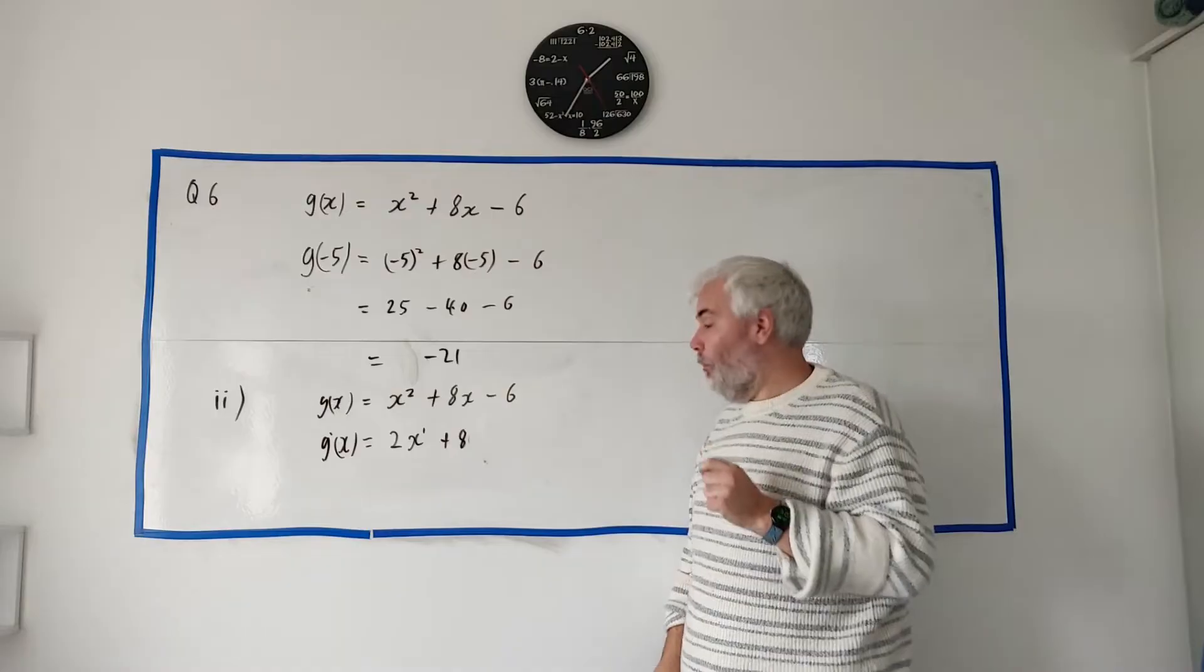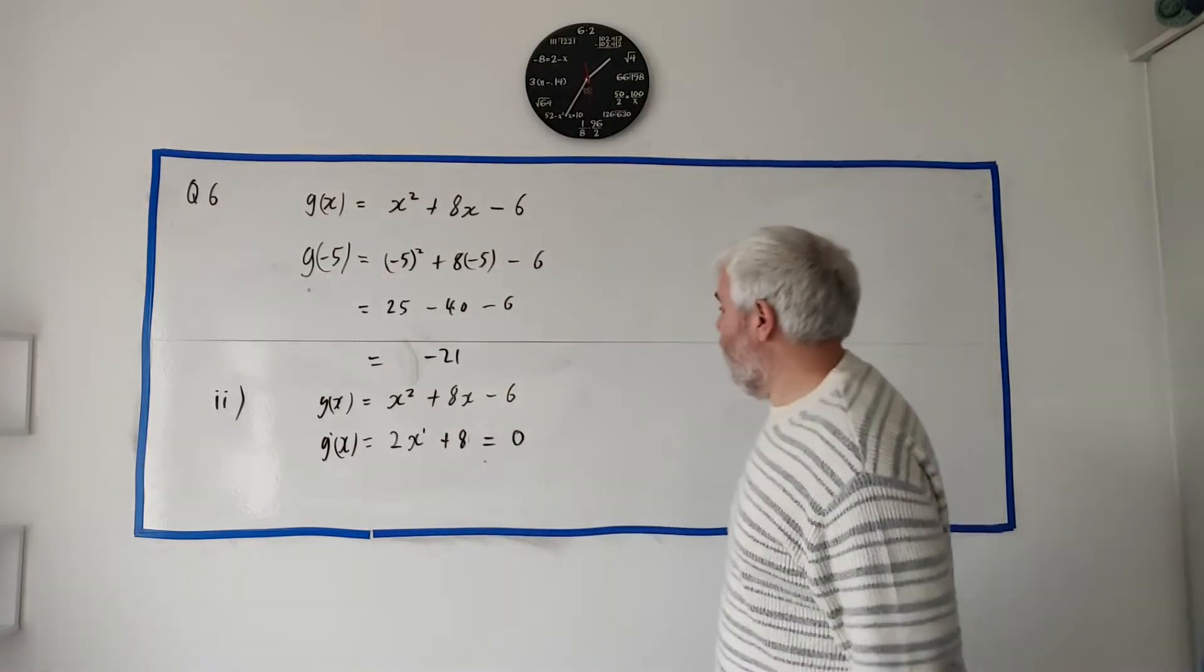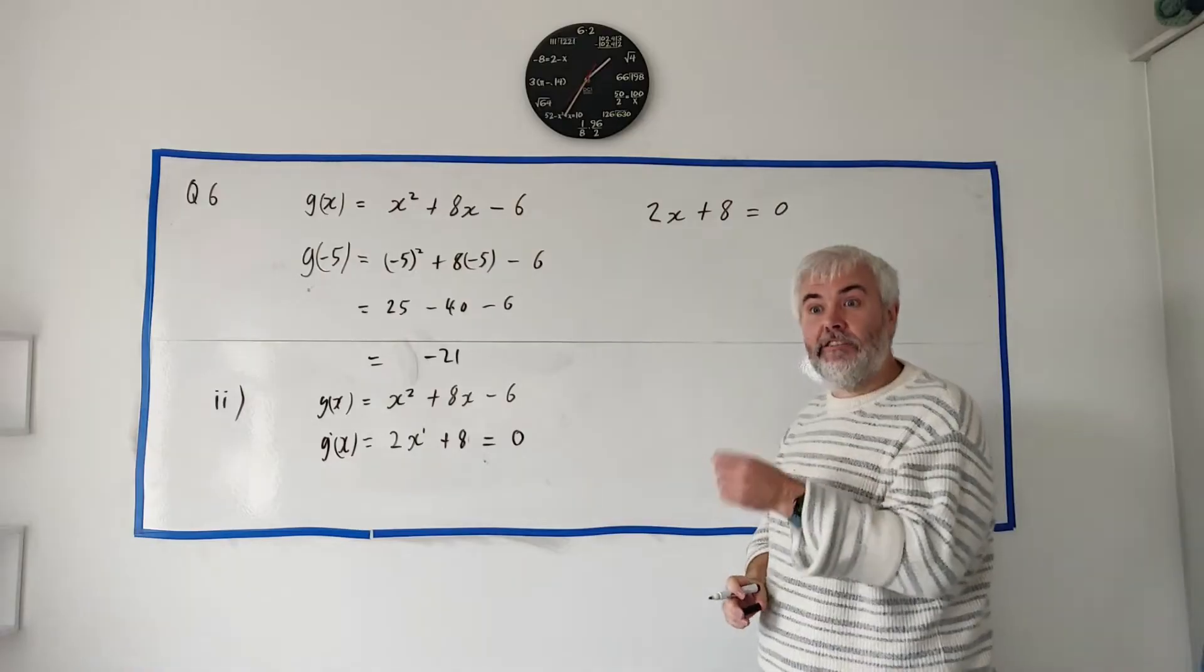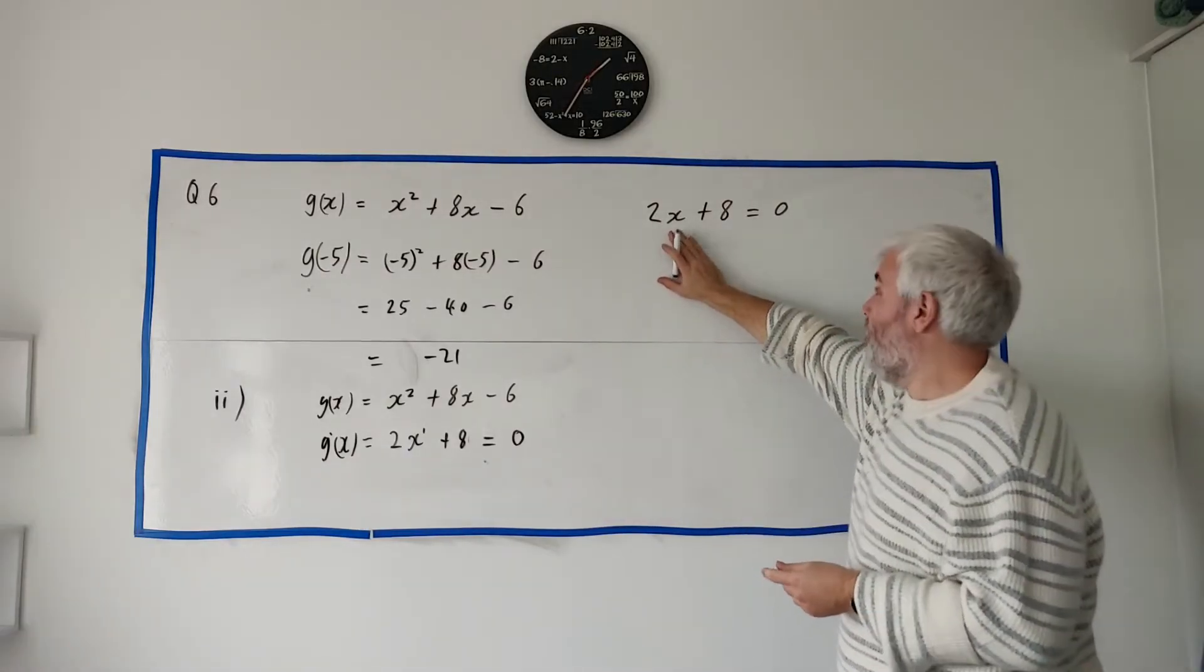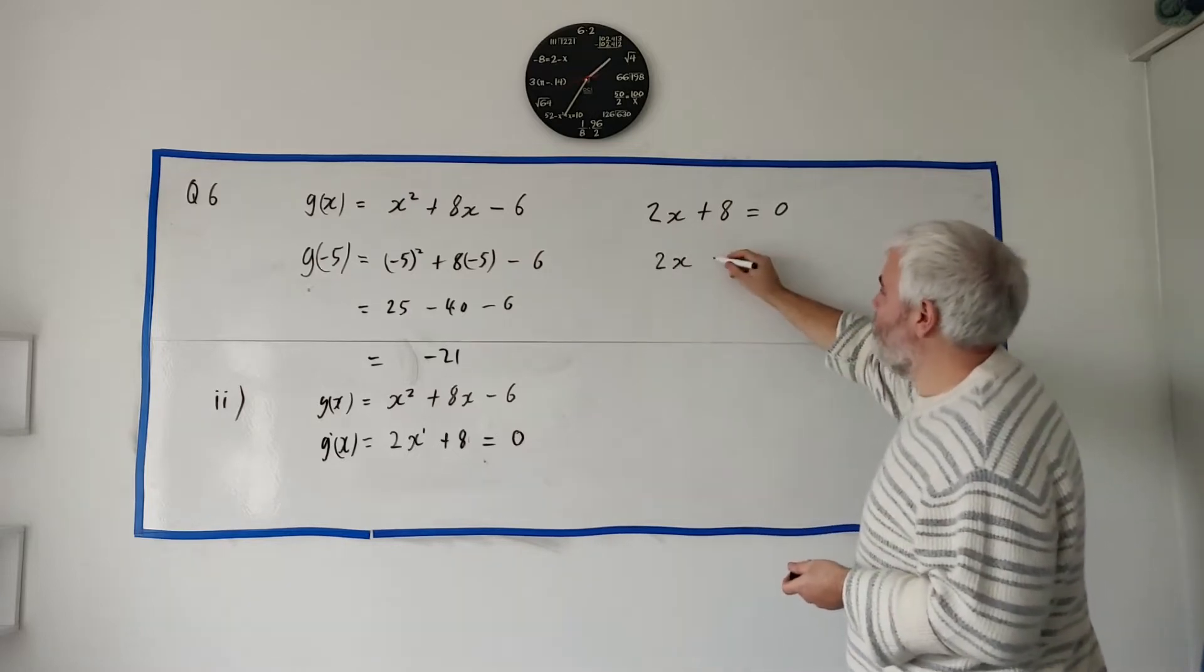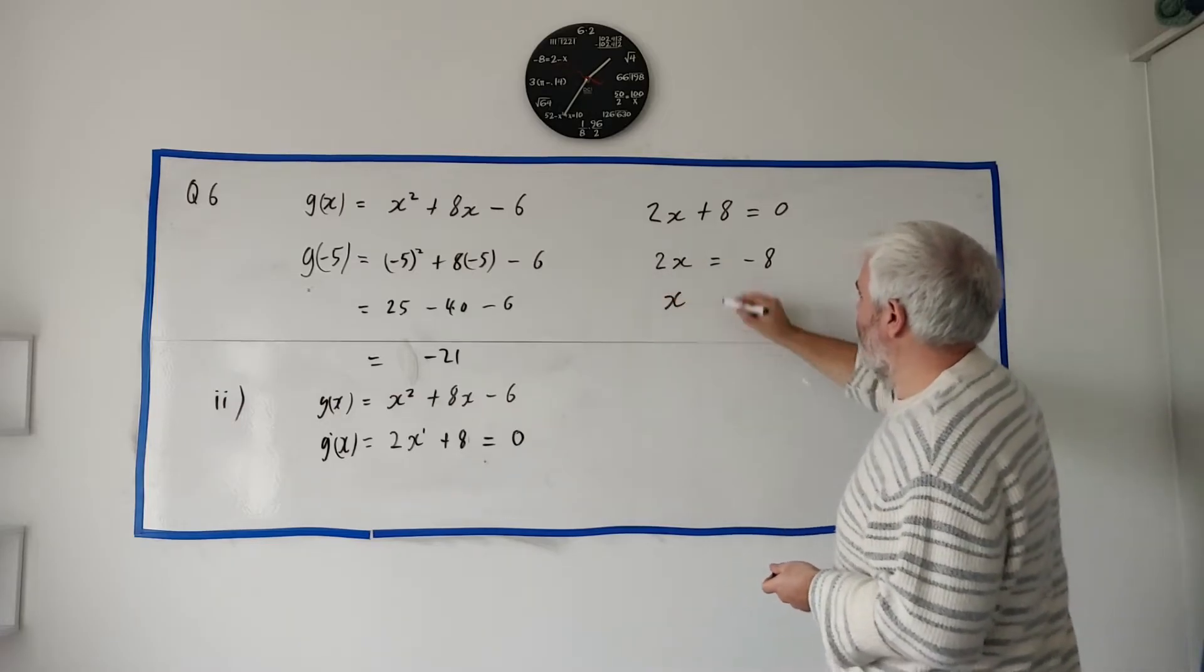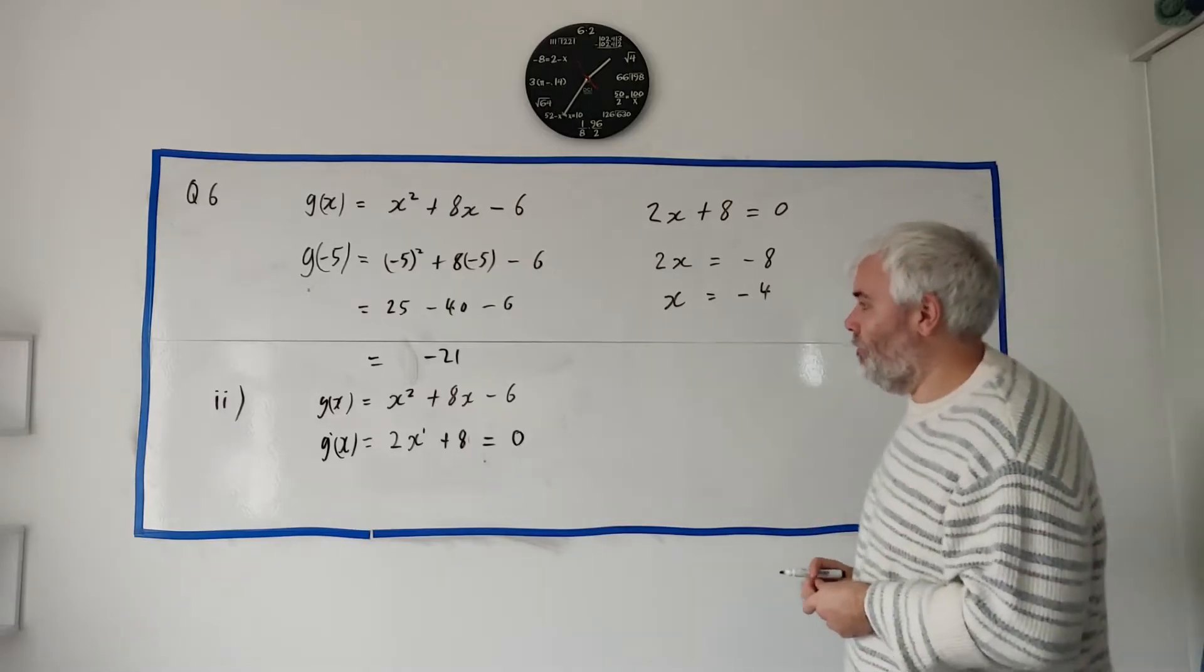Again, the power that's up here, there's a 1, multiplies in front. One times 8 is 8, and it gets one smaller. Zero. When you get to zero you don't write it at all. And then the last number, a number doesn't change when x changes so it just becomes zero. So here's what we have: the derivative is 2x + 8. Now it's at a minimum so we also know this equals zero. 2x + 8 equals zero. Let's rearrange things. Take 8 from both sides. 2x equals -8. Divide both sides by 2. x is equal to -4.